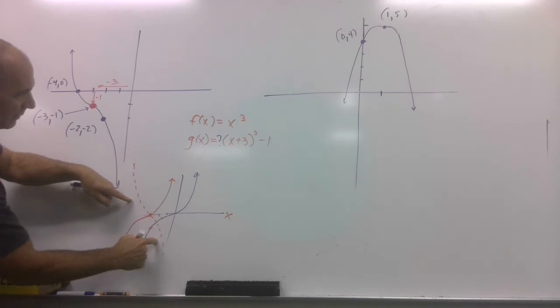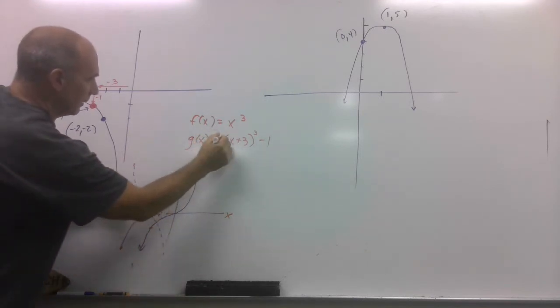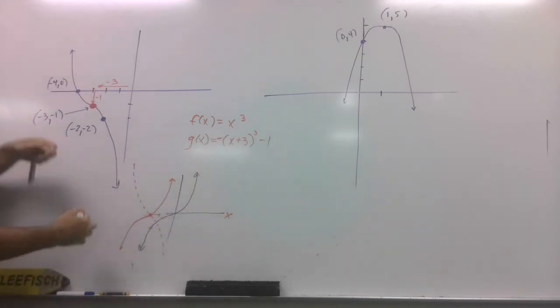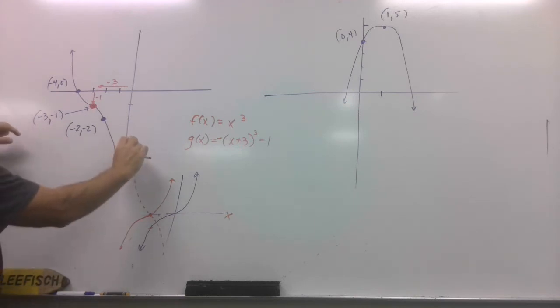If I actually took this and reflected it over the x-axis, the red one, this portion would be like this. This portion would be like that. And it looks like that's what we have here. So, you know what that means? It means there needs to be a negative in there to reflect it over the x-axis, okay?